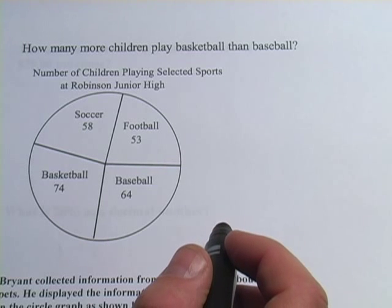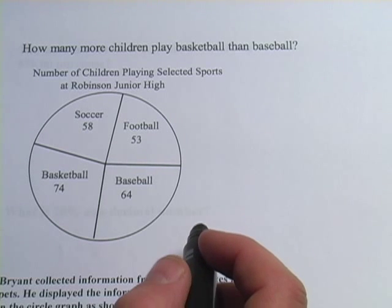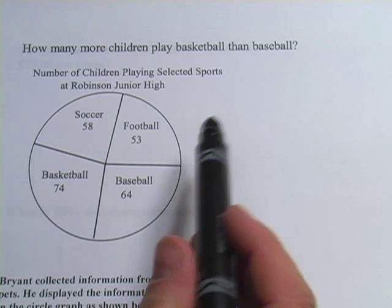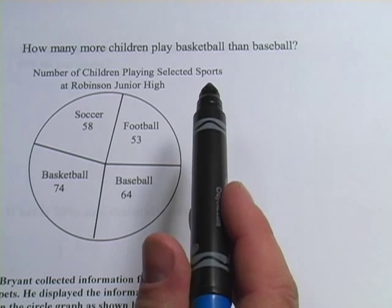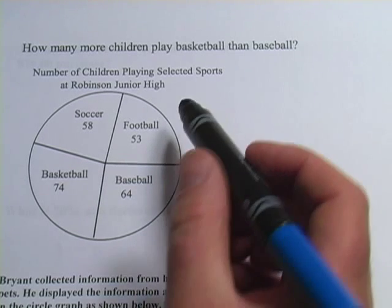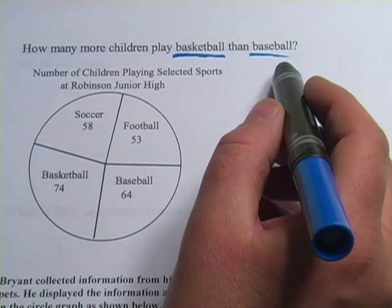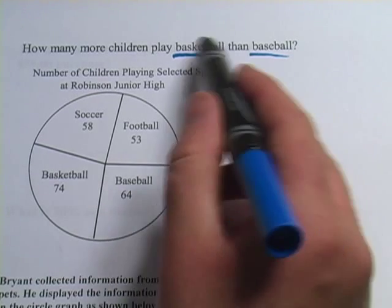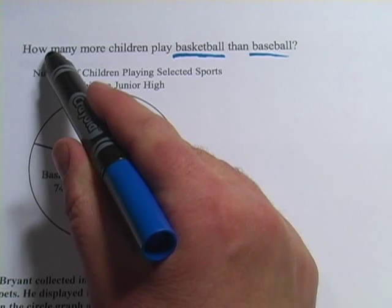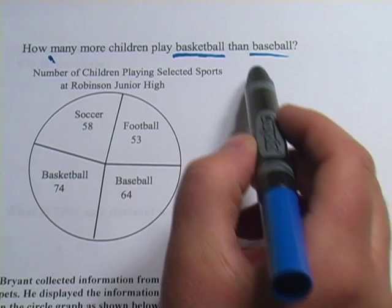In these problems, we're looking at circle graphs and how to read them. The first question says, how many more children play basketball than baseball? So we're comparing the number who play basketball with the number who play baseball, and then we'll find those numbers and do some subtraction to figure out how many more play basketball than baseball.